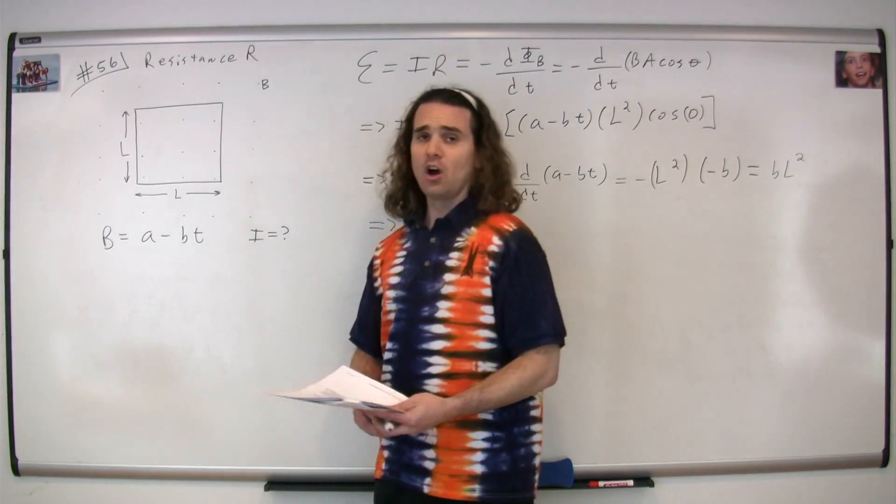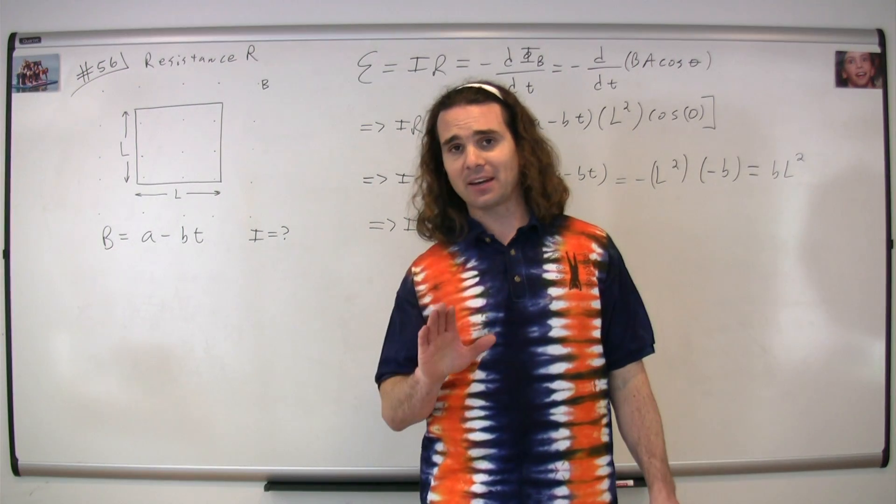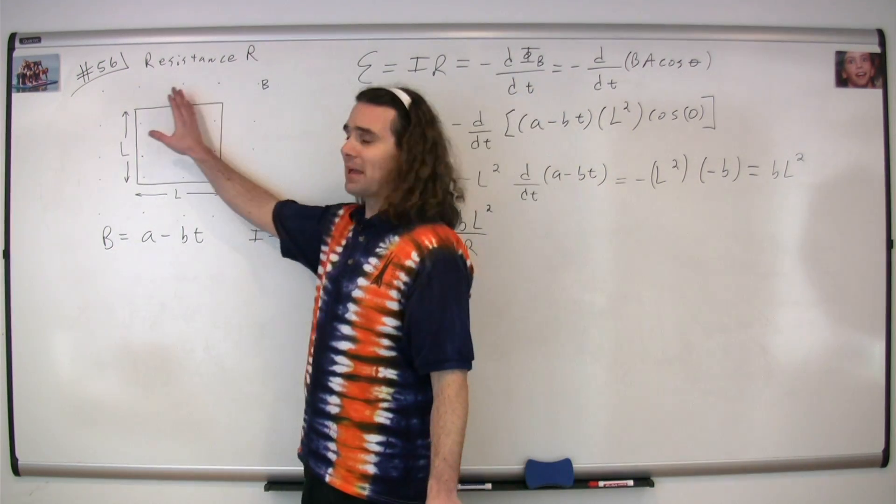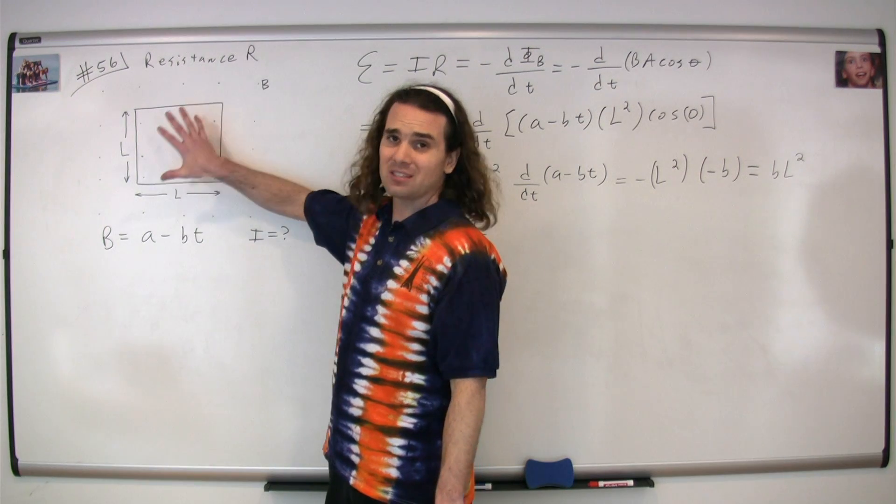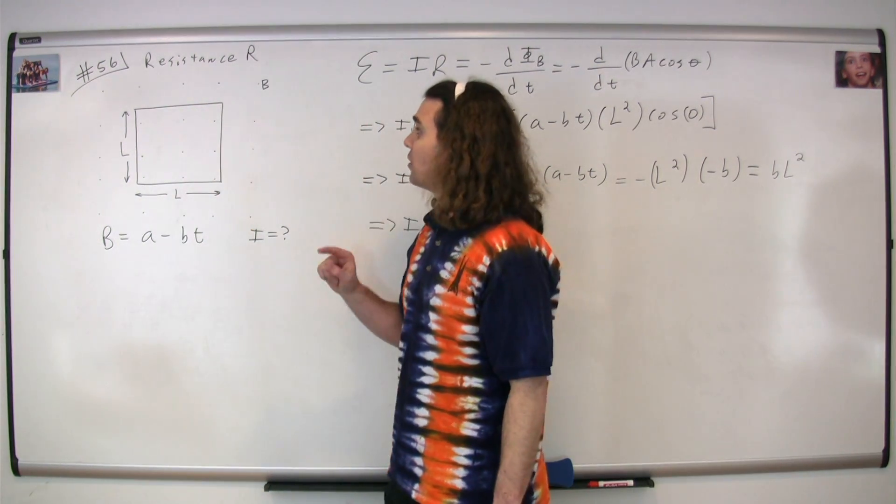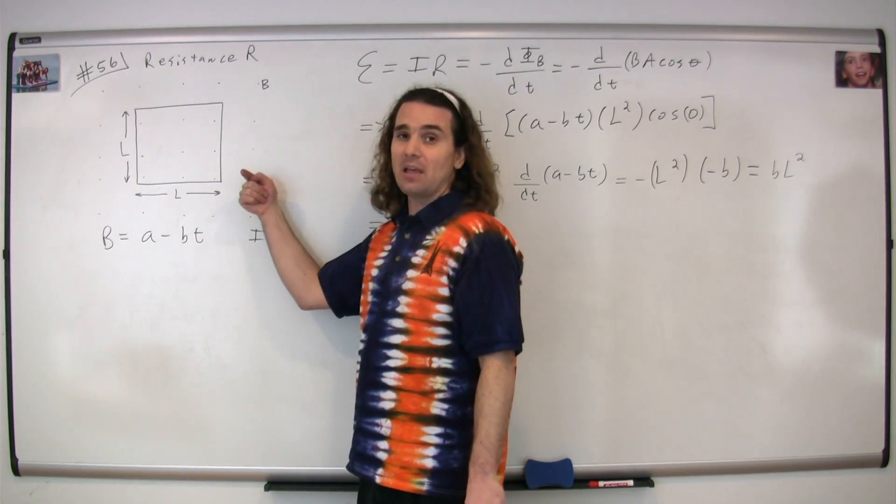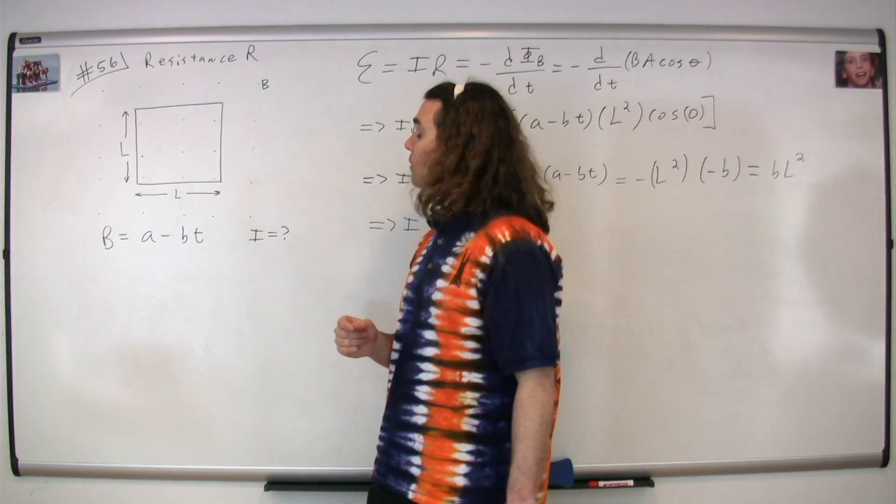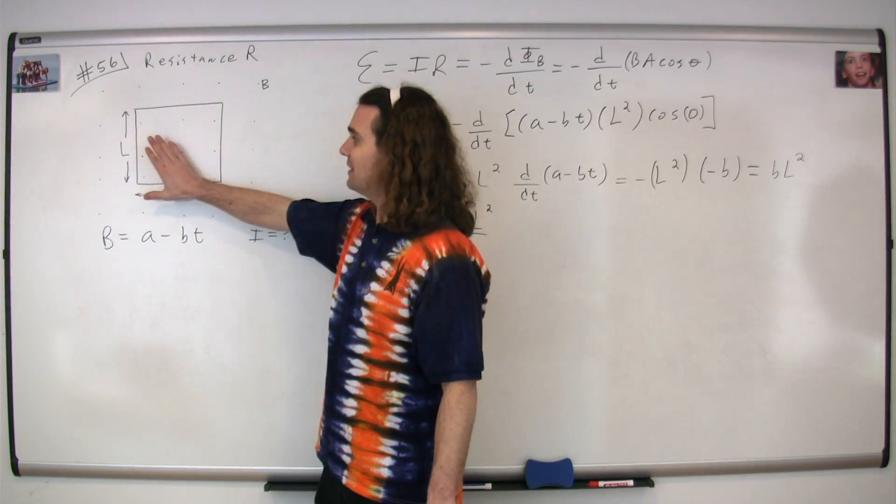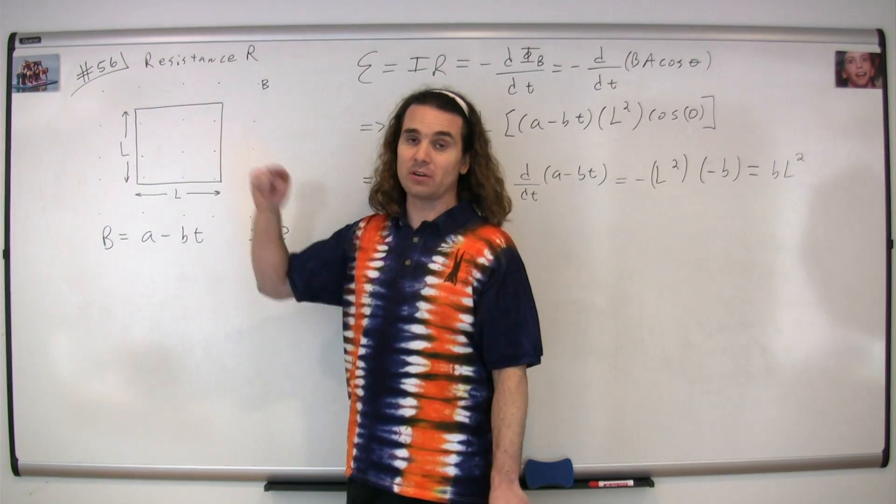According to Lenz's Law, or electromagnetic inertia, there is an induced magnetic flux, an induced magnetic field, and an induced current to try to keep the status quo. The magnetic field is out of the board and decreasing, which means that the flux inside of here is out of the board and decreasing, which means the induced magnetic flux is going to be out of the board to try to keep that magnetic flux the same.